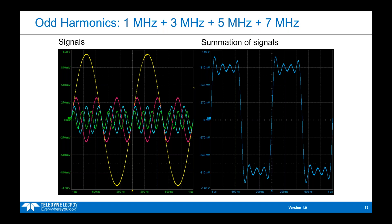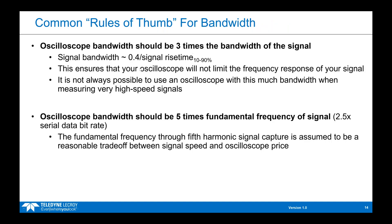You might be asking what are some rules of thumb for deciding exactly how much bandwidth you need. One rule of thumb states that you should obtain an oscilloscope with bandwidth that is three times the bandwidth of your signal, where signal bandwidth roughly follows the equation 0.4 divided by signal rise time. The takeaway is that ideally your oscilloscope's bandwidth is sufficiently higher than your signal bandwidth so the oscilloscope is not limiting the signal's frequency response.